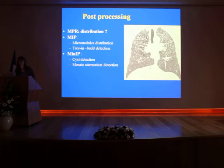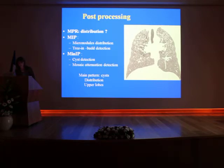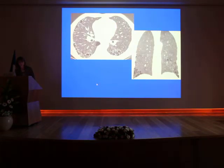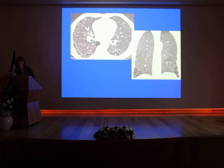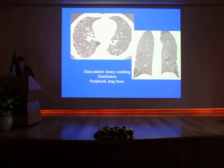Looking at this coronal reformation, the main pattern is cysts. There is upper lobe predominance, the cysts are not rounded — they have an irregular, bizarre shape. This is Langerhans cell histiocytosis. In this next case, the main pattern is several layers of cysts at the lung periphery — honeycombing. The distribution is prevalent at the lung base and it is peripheral: this is UIP, and in this case the patient had lupus.